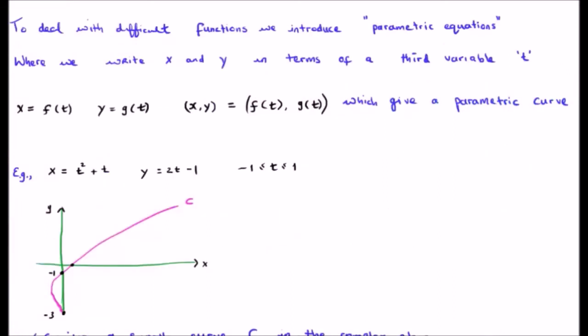So to deal with difficult functions, we introduce the parametric equation, where we write x and y in terms of a third variable t. This is the parameterization variable. So we write x as a function of t, y is a function of t, and z, which is a function of x and y, now also becomes a function of t. This will give us the parametric curve.